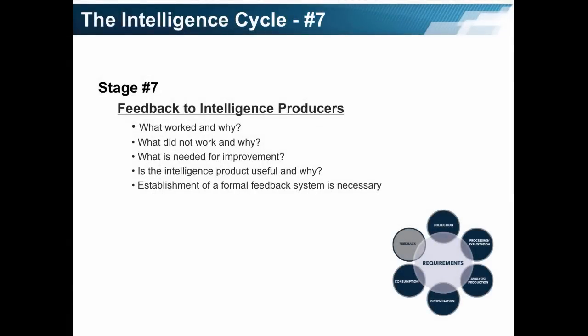In Stage 7, feedback to intelligence producers. Policymakers and supervisors are usually reluctant to do this for whatever reason, but it is extremely important that the intelligence producer hears what worked and why, what did not work and why — this is as critically important as what worked — and what is needed for improvement. Everything needs to be improved; nothing is perfect. Is the intelligence product useful? What made it useful? And if there is no official feedback within the organization, then the establishment of a formal feedback system is really necessary. People need to know that they are doing well, what they need to improve, and most importantly, what is the purpose and usefulness of their work.